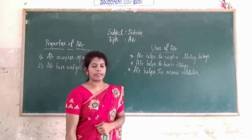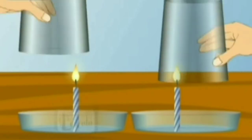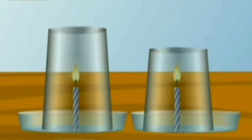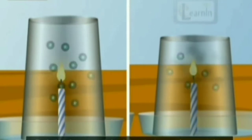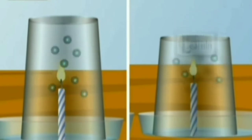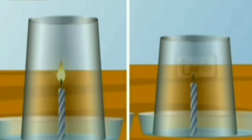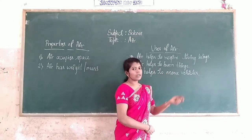Let's check with an activity. Take two candles and ignite them — cover them with glasses, one smaller and one bigger. You will see candles burning for some time. But after some time, the candle in the smaller glass gets extinguished first, before the one in the bigger glass. After some more time, the other candle also stops burning. Why did the candles stop burning? Because of the lack of oxygen present inside the glass. This activity shows that air helps to burn things.